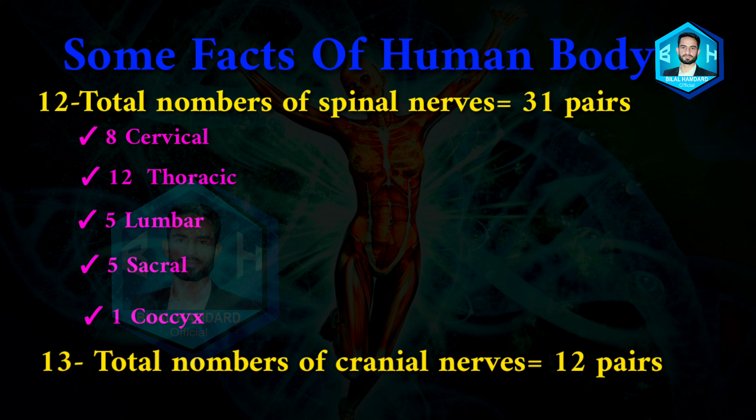Number thirteen: total number of cranial nerves is 12. In the human body, the cranial nerves are 12 pairs.